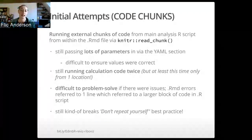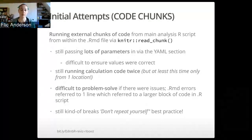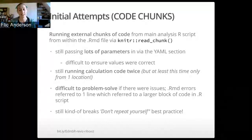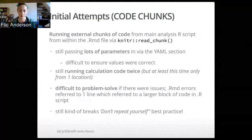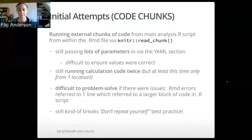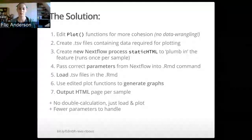I realized that you can run external chunks of code from your main R script from within an R Markdown file using the read_chunk function in the knitr package. But I was still passing in a lot of parameters via the YAML section, still calculating again, and because of the extra layer of abstraction, it was difficult to make sure values were correct. An R Markdown error would refer to one line of code within the R Markdown document, which would then refer to a larger block of code in the R script. And we were still breaking 'don't repeat yourself.'